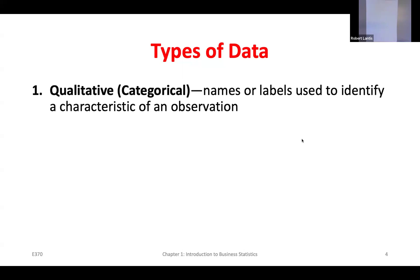Within these categories we can break things down further. For qualitative data, the first sub-category is what we call a nominal variable. These are categories that have no intrinsic value — you can't rank order them. The color of a car is nominal. Hair color, gender, baseball positions — all of these I can't rank. They're just some characteristic of the observation. So that position variable in our Cubs data is a nominal variable.